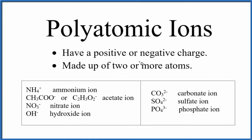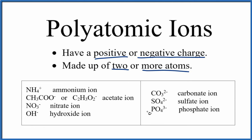Polyatomic ions have a positive or a negative charge, and they're made up of two or more atoms. These seven are the ones I have my students memorize. They all have charges, either positive or negative, and they're all made up of two or more atoms.